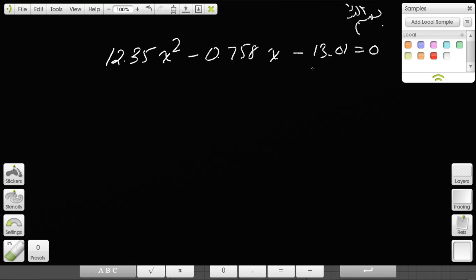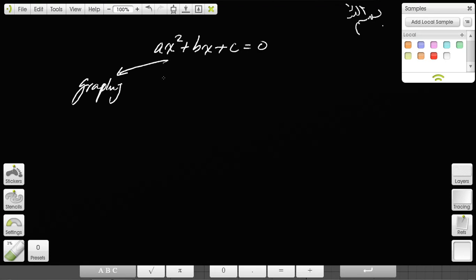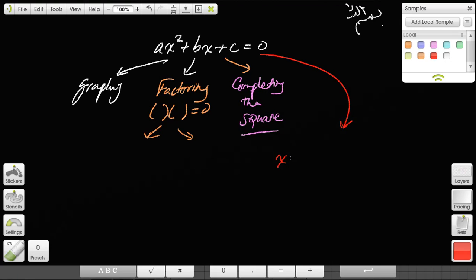As a review, ax² + bx + c = 0 is a quadratic equation. There are four ways of solving this: first is graphing, second is factoring, third is completing the square, which is important, and finally the fourth way is the quadratic formula, which we just did.